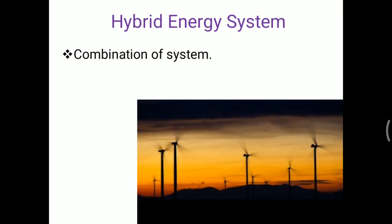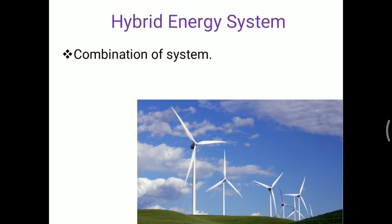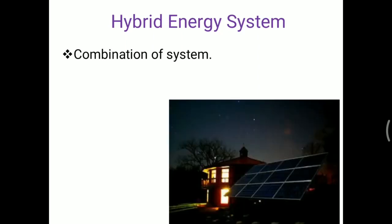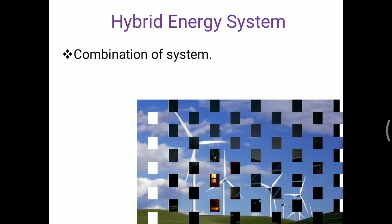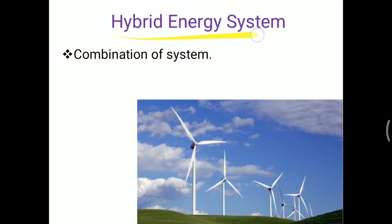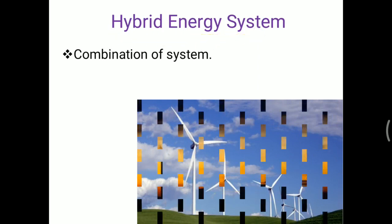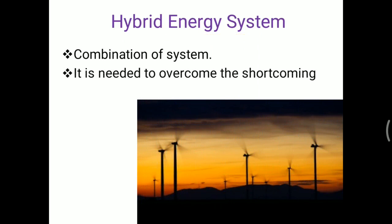At night, the air velocity is maximum, so wind energy generates maximum electricity at night. However, during the day session, wind energy cannot generate electricity at maximum quantity. Similarly, solar energy cannot be generated at night. So when we combine these two systems, that combined system is called a hybrid energy system.